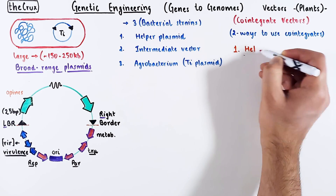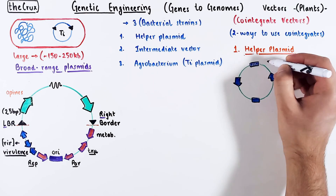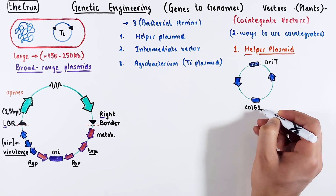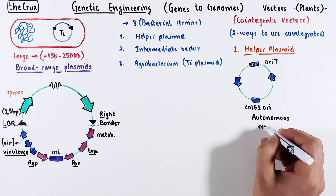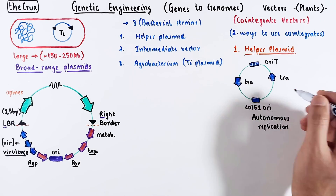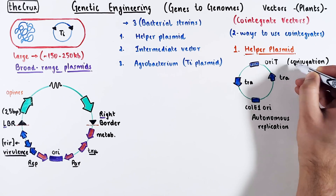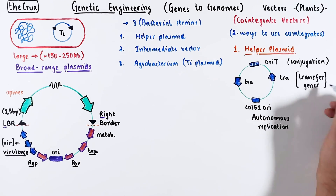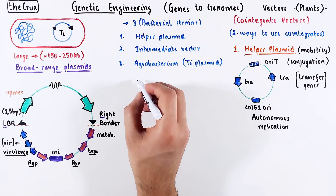Let's look at the features of the helper plasmid. It has two origins: one is the ColE1-type ORI, and the other is ORI-T. ColE1-type helps in plasmid replication, whereas ORI-T, with the help of transfer genes, helps in the transfer of this plasmid through conjugation. So the helper plasmid is a mobile plasmid.